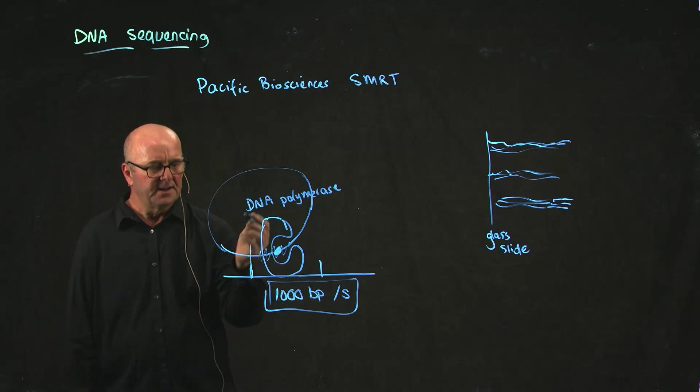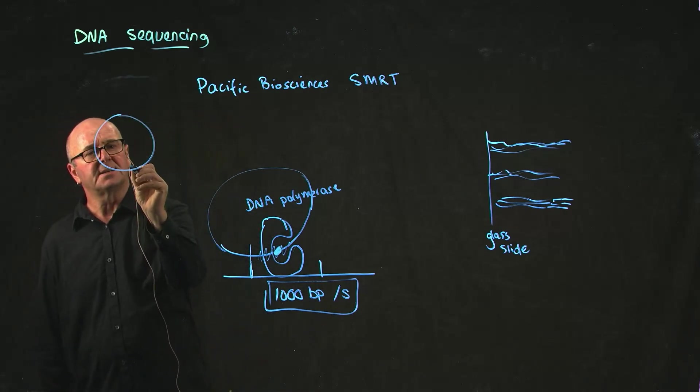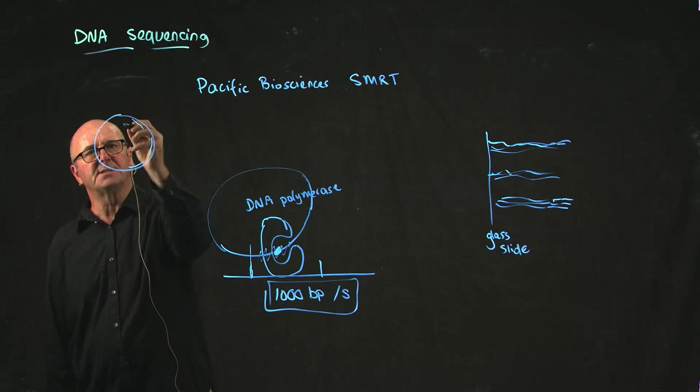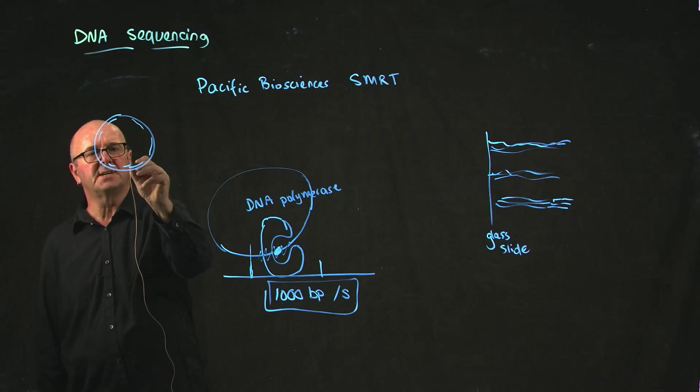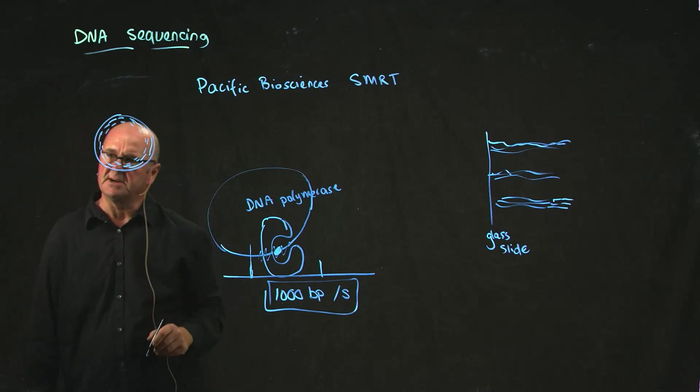The solution to that is to create the DNA into a circle and to capture a few bases here, let the DNA polymerase run, capture a few bases here, capture a few bases here, and then over time, you're going to put that whole thing back together because you're going to capture all of the bases all the way around.